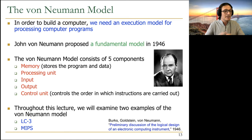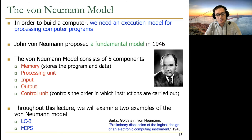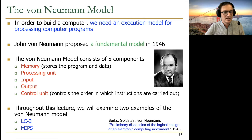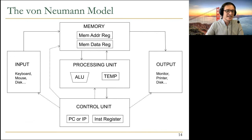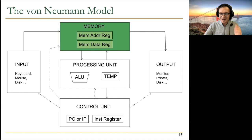The von Neumann model doesn't necessarily enable the highest performance, as we'll see later. But it's very clean and helps programmers in many ways. The programmer can clearly distinguish between these five components — input, output, processing unit, memory. The control unit enables programmers to assume that instructions are carried out in program order. The pictorial view of the von Neumann model is from your Pat and Patel book — both MIPS and LC3 have essentially the same components.